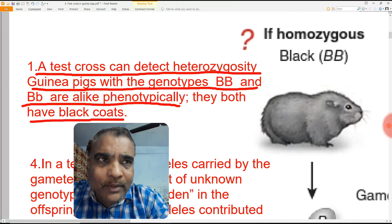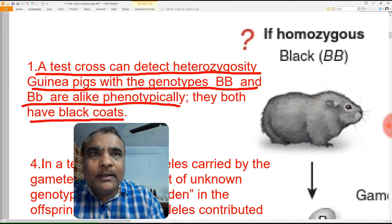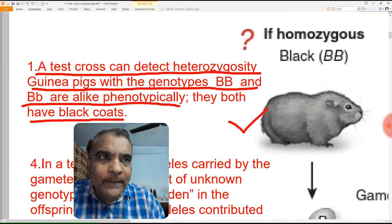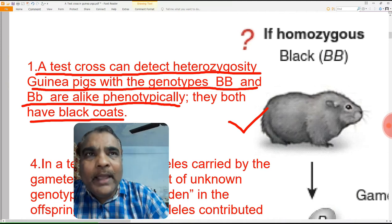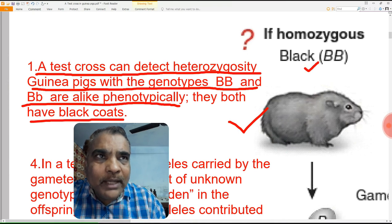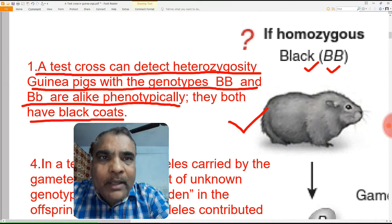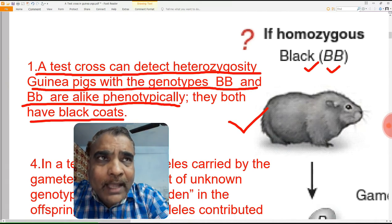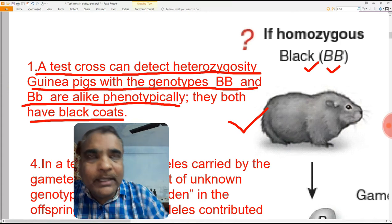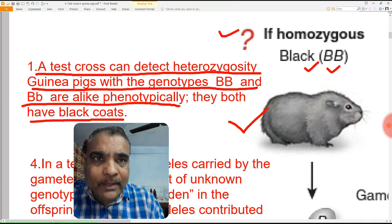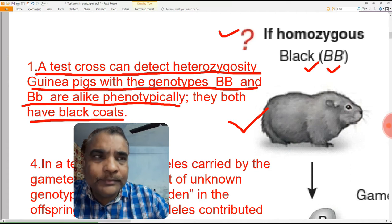To solve this problem — to find out the heterozygosity of the guinea pig — the test cross is helpful. This guinea pig has a black coat color, and the genotype could be BB. But can we surely say it is homozygous? How are we going to find out? That is the question: is this guinea pig a homozygous one?